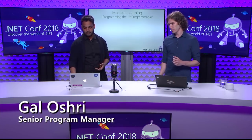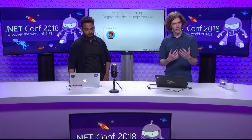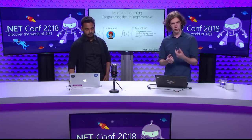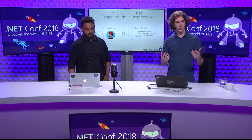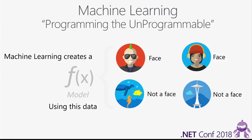Before we get started, a lot of you folks might just be getting started with Machine Learning. One way to think about Machine Learning is that it helps you program the unprogrammable. If I wanted to write a function that takes an image as input and tells us whether there's a face in it, it's not clear how you'd write that. Similarly, predicting the price of a shirt from its description is difficult. With ML, we have many examples of inputs and outputs as data sets, and Machine Learning lets us take that data and create a model that can predict the output.